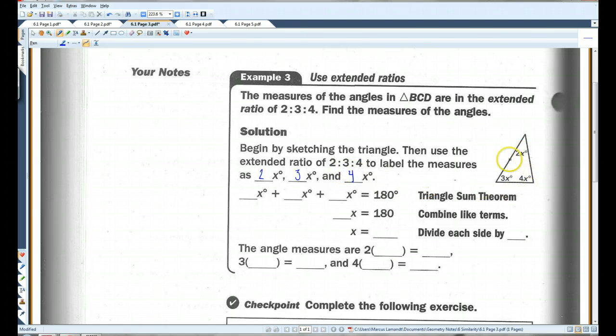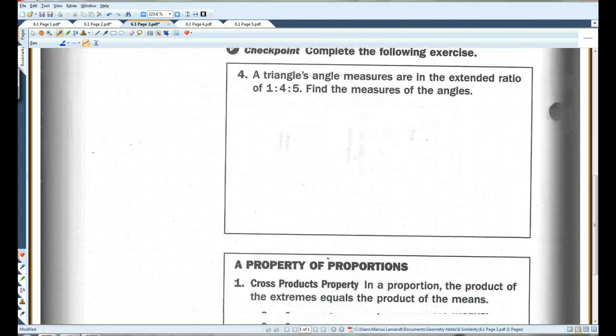Now, we know that all the angles inside a triangle have to add up to 180 degrees. So I'm going to say 2x plus 3x plus 4x equals 180. 2 plus 3 is 5, plus 4 is 9. So I have 9x equals 180. I'm going to divide each side by 9. 180 divided by 9 is 20. So the angle measures are 2 times 20, which is 40, 3 times 20, which is 60, and 4 times 20, which is 80. And these are all degrees.